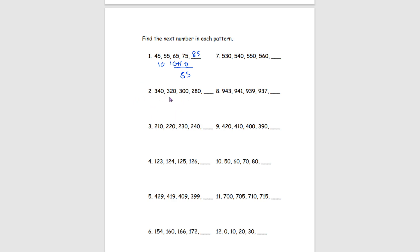Looking at number 2, we have 340, 320, 300, and 280. Finding the common difference: 340 to 320 is minus 20, same for 320 to 300, and 300 to 280. So our pattern is minus 20. To get our answer, we do 280 minus 20: 0 minus 0 is 0, 8 minus 2 is 6, bring down the 2. Our answer for number 2 is 260.